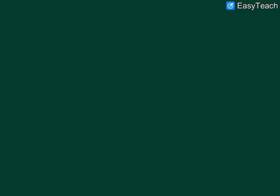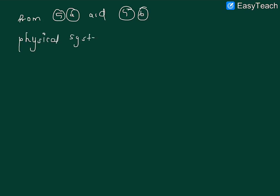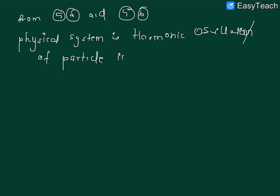From equations 5a and 5b we can conclude that the physical system described by this Lagrangian is a harmonic oscillator — specifically, oscillations of a particle in two dimensions.